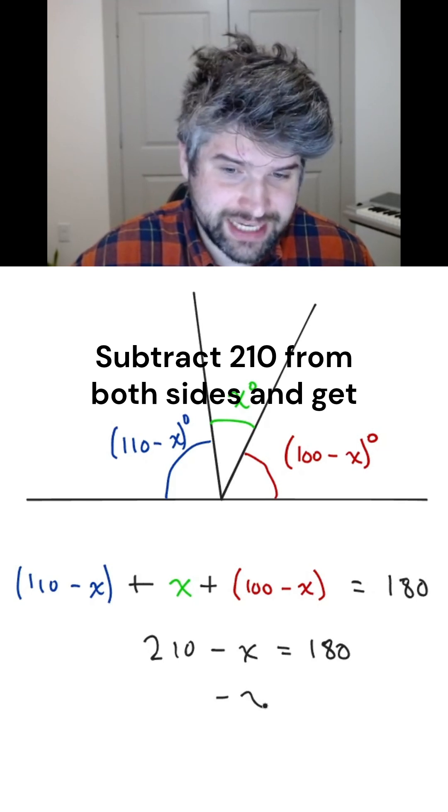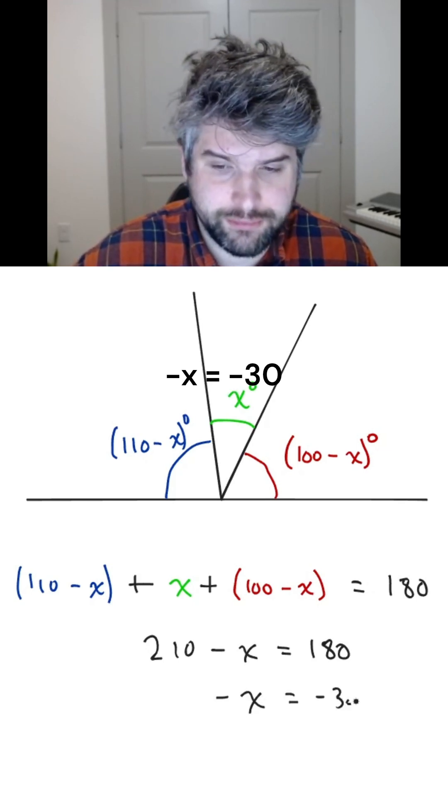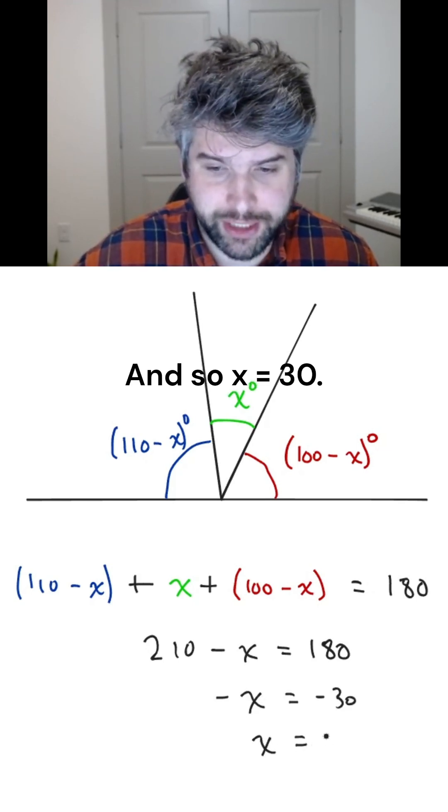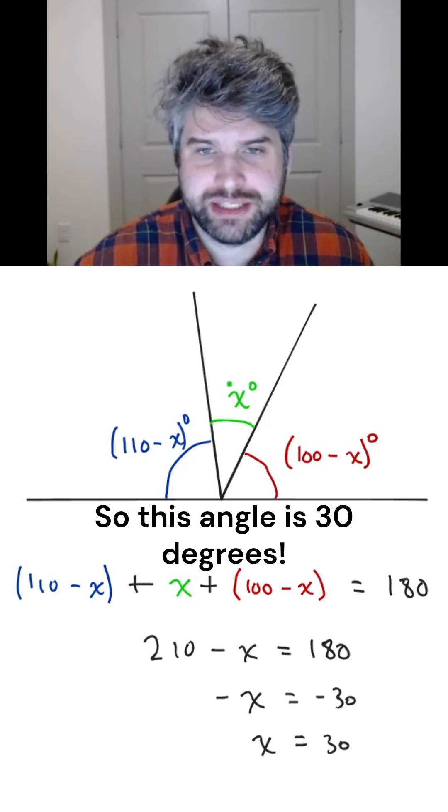Subtract 210 from both sides and get negative x equals negative 30. And so x equals 30. So this angle is 30 degrees.